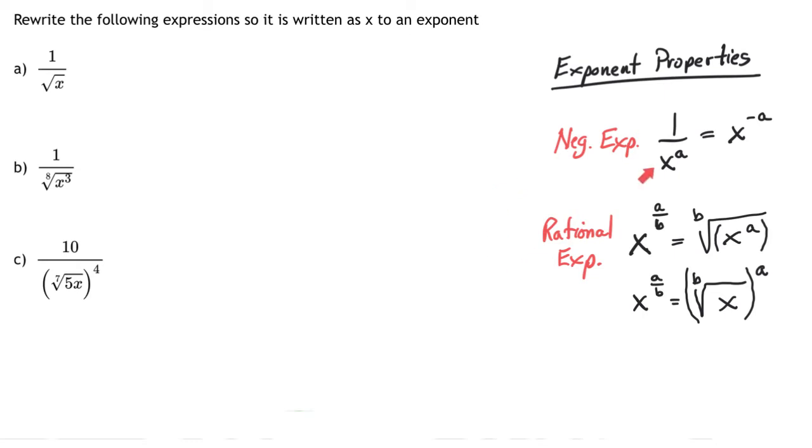First, the negative exponent property. Whenever you have any kind of term in a fraction and you move its position from the denominator to the numerator, or vice versa, the exponent's sign changes. Notice that if I have this written like this, if I bring it up to the numerator, it becomes x to the negative a. Or if I start with x to the negative a and bring it down to the denominator, it becomes x to the positive a. The sign changes.